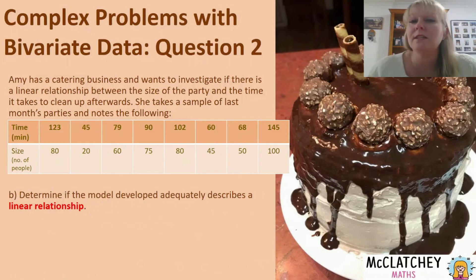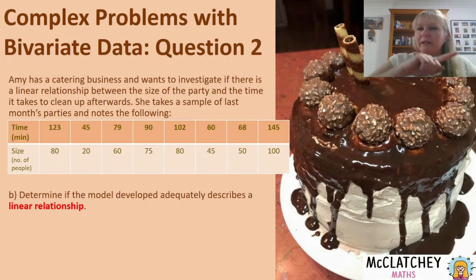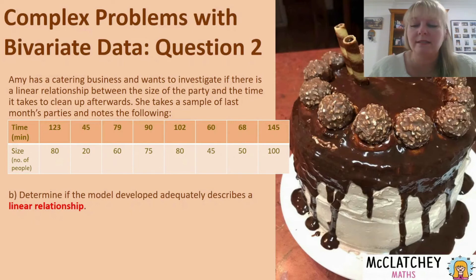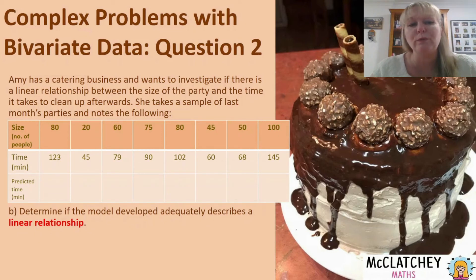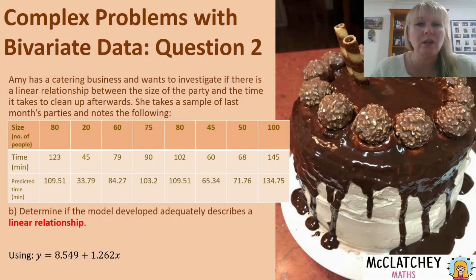Let's look at part B. They want us to determine if the model adequately describes a linear relationship. You should be thinking: is this model really a straight line, or does it start to fall apart and become nonlinear? The way we do that is to develop a residual plot. Our first step is to add to the table by taking our equation y = 8.549 + 1.262x and substituting each of those x values — the size of the party — to work out a prediction based on the equation.